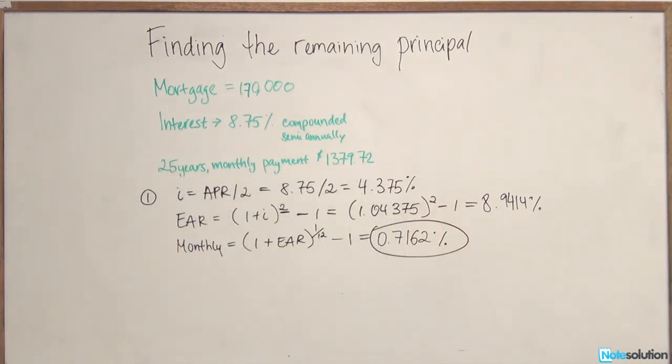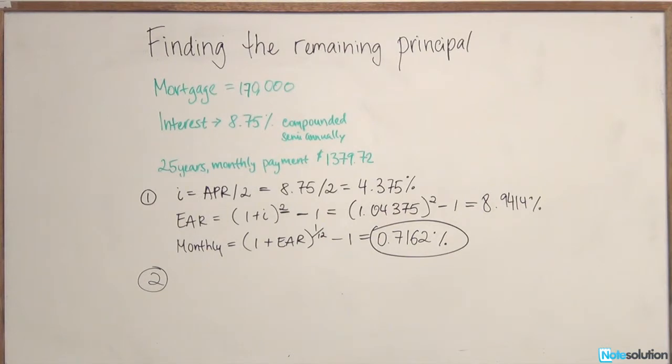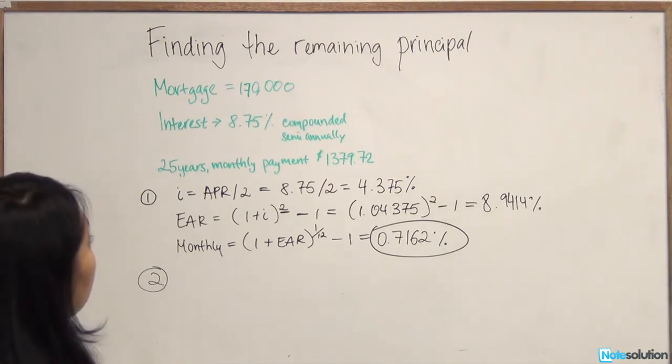Now that we have everything in monthly terms, we can calculate the amount of the principal remaining on the mortgage. Remember that at any time the remaining principal equals the present value of the cash flows. So we're going to use the financial calculator to find the present value with the following inputs.